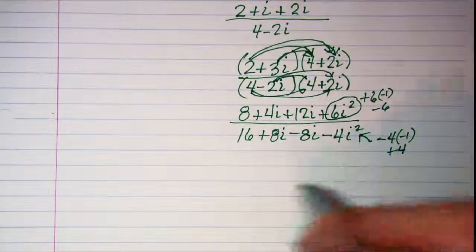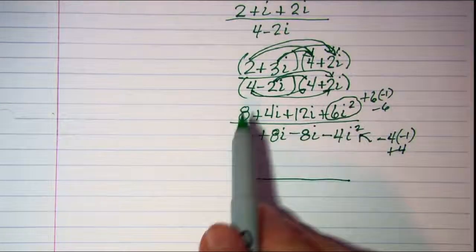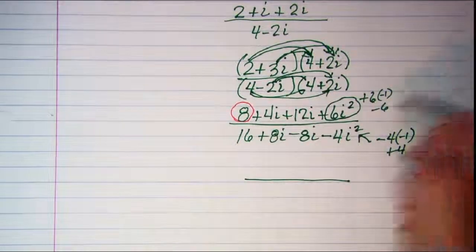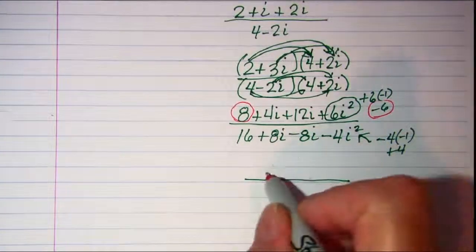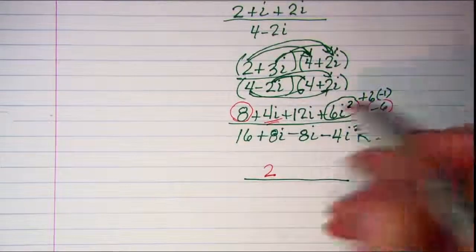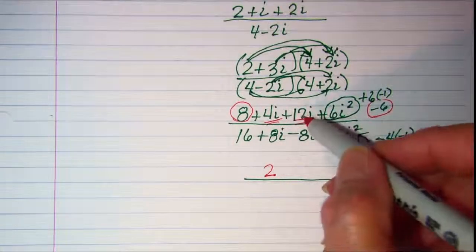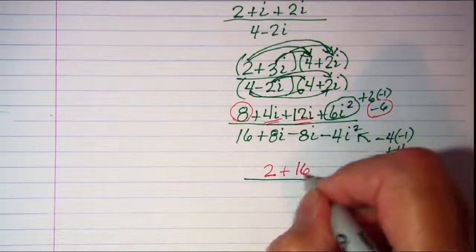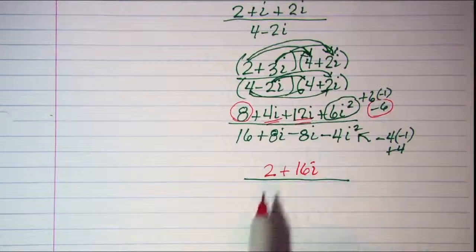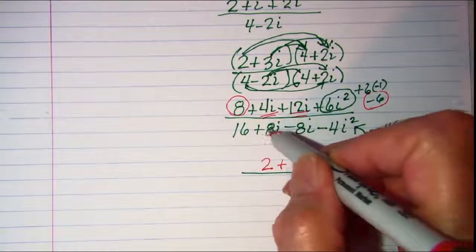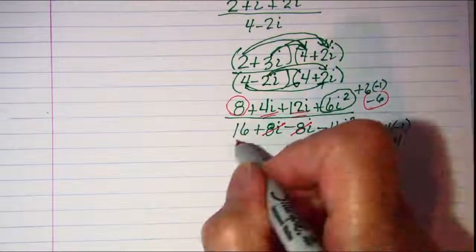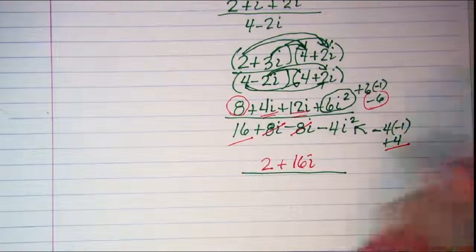So we can combine like terms. In the numerator I have 8 minus 6 which is 2 and then I have 4 plus 12 which is 16i. In the denominator I have 8i and negative 8i. Those cancel off. And I have 16 plus 4 is 20.